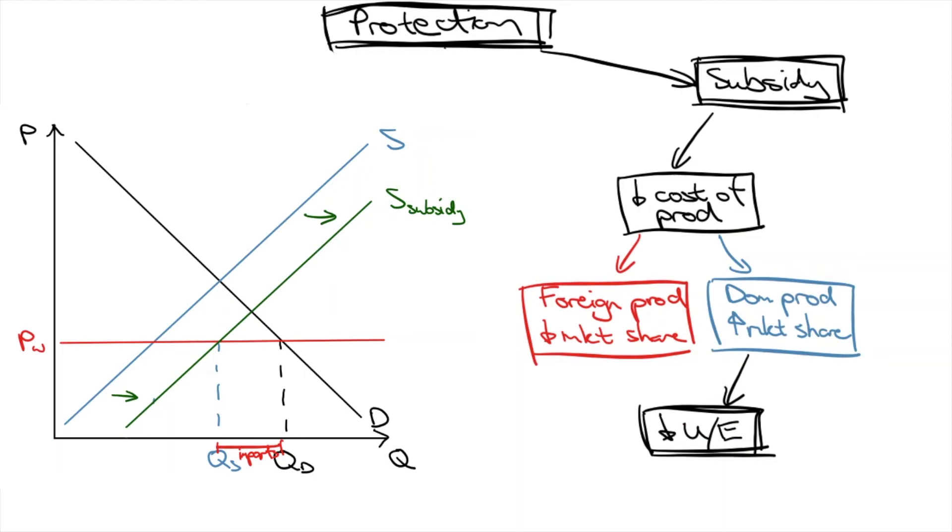How about the impact on the government budget? First, here's a quick tip. To figure out the size of the subsidy, look for the vertical distance between the supply curves. Why? Because you're trying to see how many dollars the supply curve has been lowered as a result of the subsidy. With this, you can calculate how much the government is spending in total on the subsidy. The total expenditure on the subsidy is the domestic quantity supplied times the size of the subsidy, shown by this box.